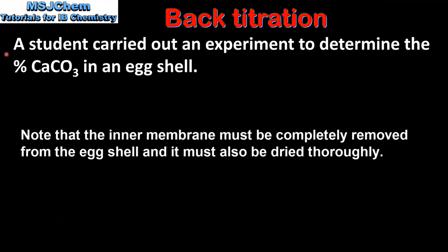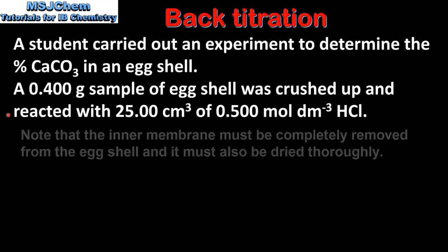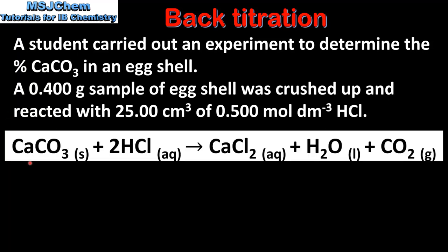A student carried out an experiment to determine the percentage calcium carbonate in an eggshell. A 0.4 gram sample of eggshell was crushed up and reacted with 25 cm³ of 0.5 mol per dm³ hydrochloric acid. The calcium carbonate in the eggshell reacts with hydrochloric acid to produce the salt calcium chloride, water, and carbon dioxide gas.